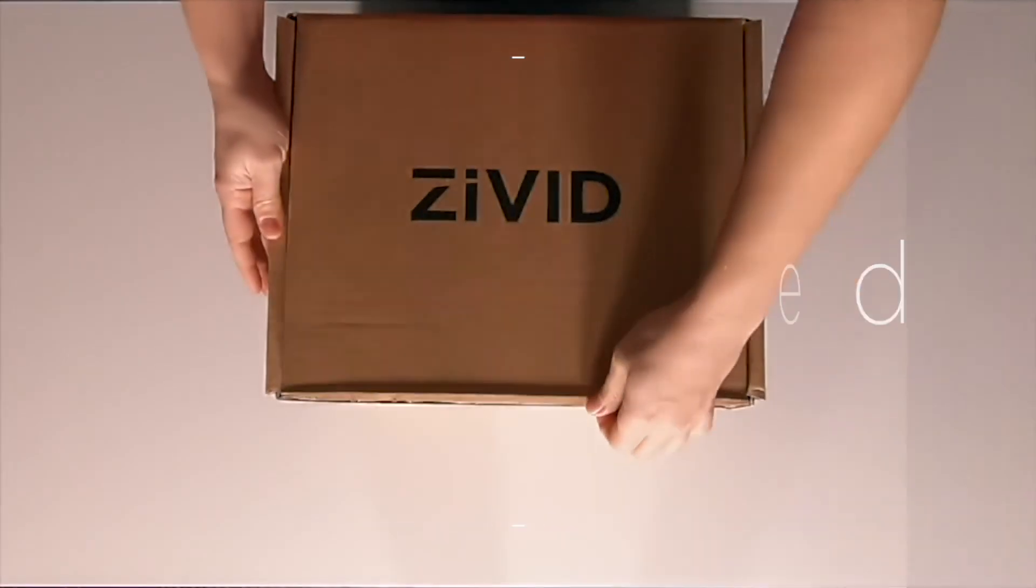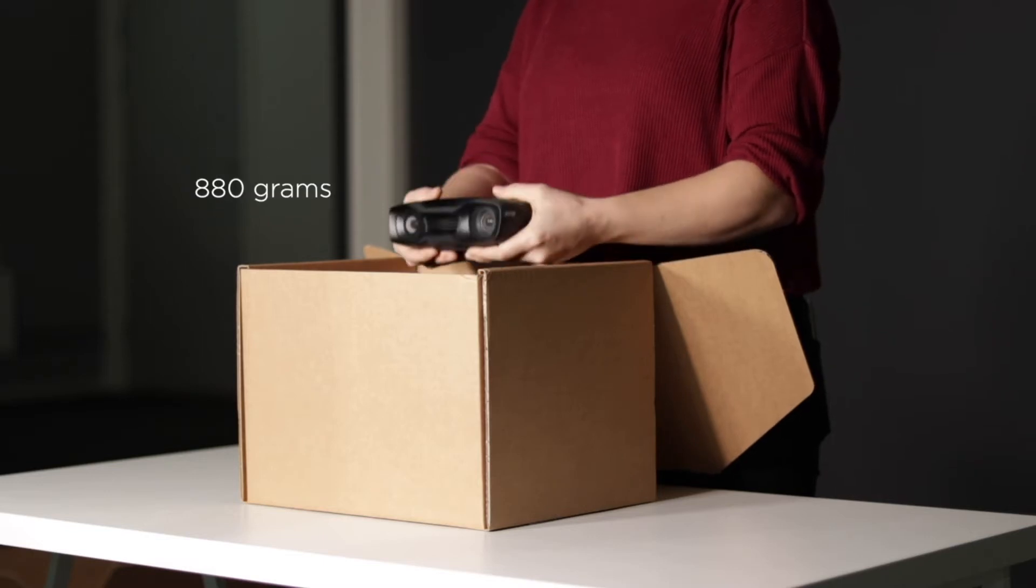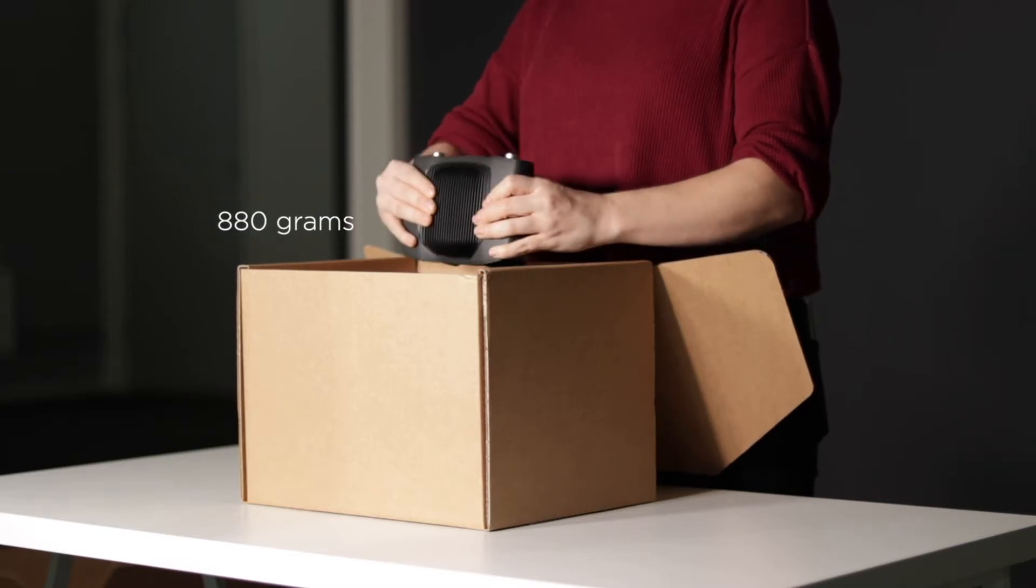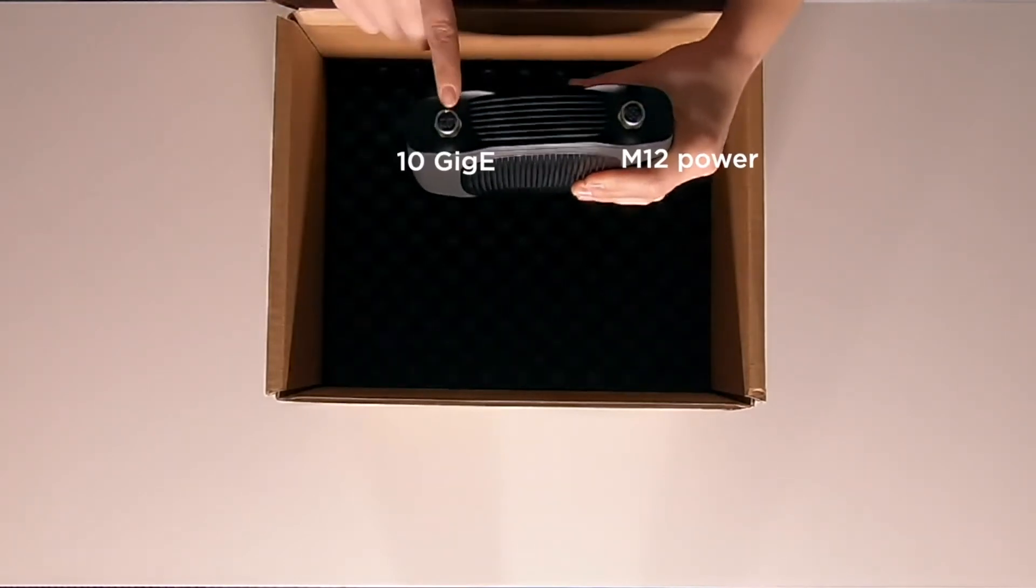We'll start with the exciting part first, the unboxing of a brand new Zivid 2 camera. Small form factor, weighs only 880 grams, has two ports on the back, one for power, one for ethernet.